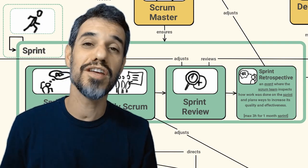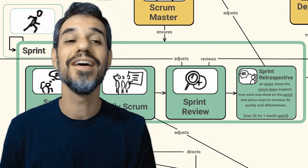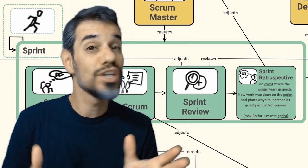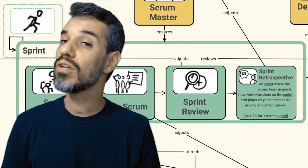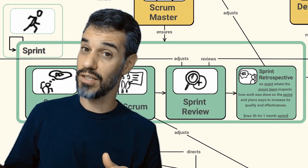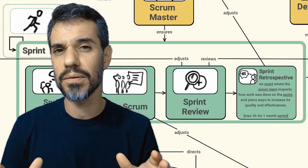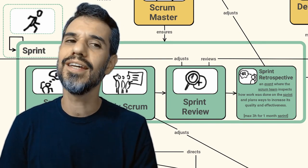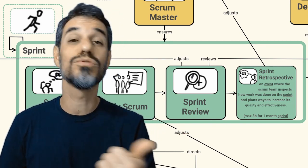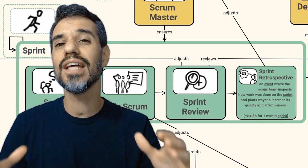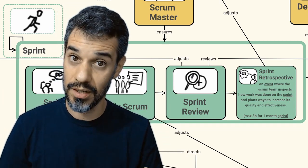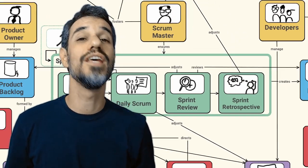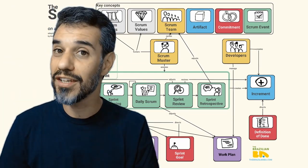And the last event on Scrum is the sprint retrospective. This is the event that concludes a sprint. It's an event not for stakeholders outside of the Scrum team. It's just for the Scrum team and the inspection is not going to be made in the increment or the results of the Scrum, but in the way that the work is being done. The sprint retrospective may adjust how the team is working in the Scrum.